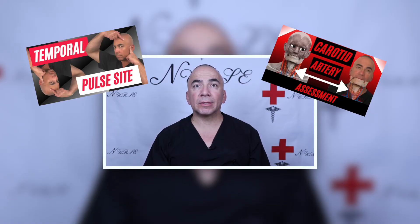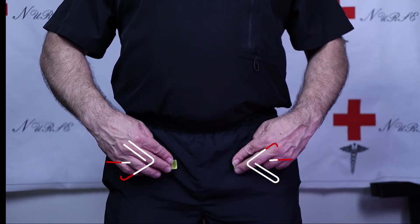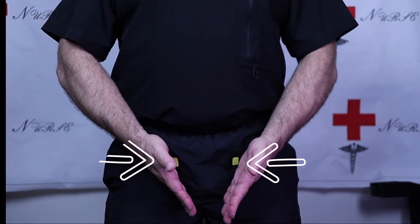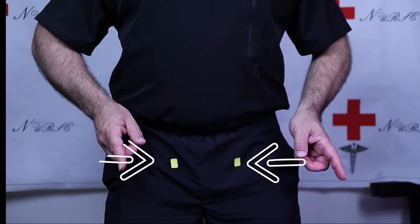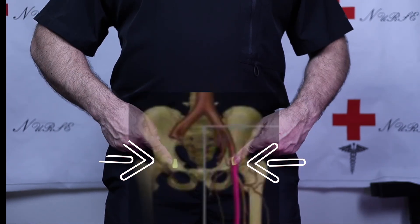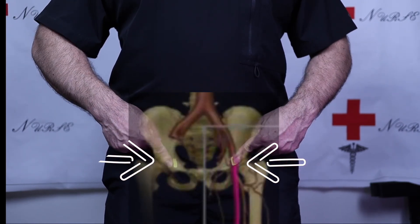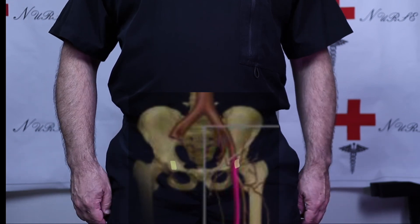To assess our femoral pulse, this is located in the inner thigh at the mid-inguinal point — halfway between the pubic symphysis and the anterior superior iliac spine.